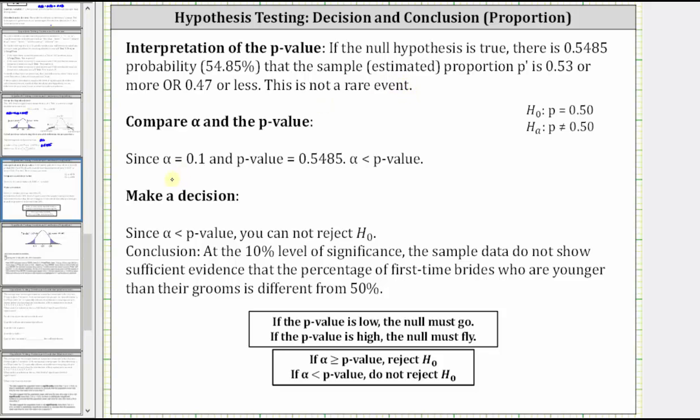So if we compare alpha to the P value, notice how the P value is high compared to alpha. Looking at our notes below, if the P value is high, the null must fly. Or more formally, because the P value is greater than alpha or because alpha is less than the P value, we do not reject the null hypothesis.